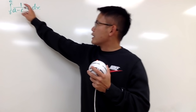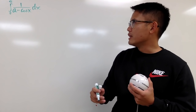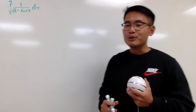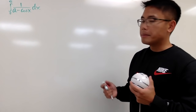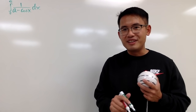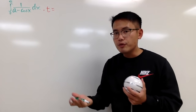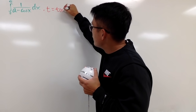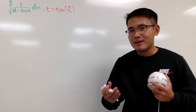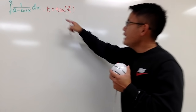Here we have a rational expression in terms of cosine. You can try to use any of the identities or whatever you want, but I will try to use the Weierstrass substitution. I have a video on that — the link will be in the description. The idea is to start by letting t equal to tangent of x over 2. Go check that video out for the why and how.